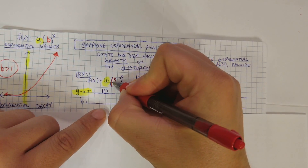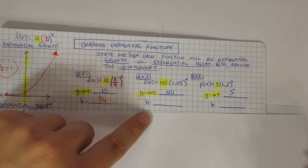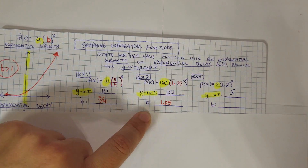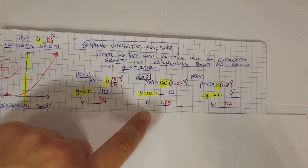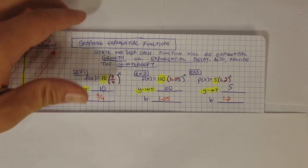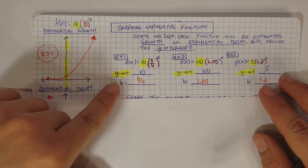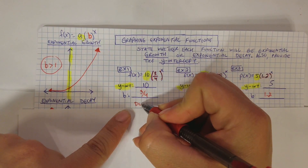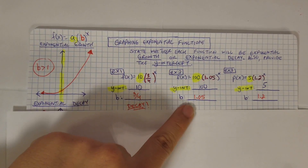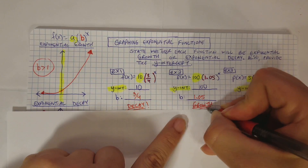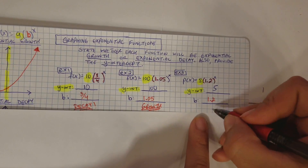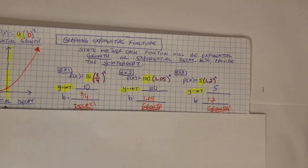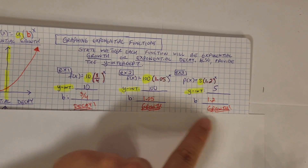So b for example 1 is 3/4. B for example 2 is 1.05, and for example 3, b is equal to 1.2. Remember the rule: if the value of b is less than 1, it's exponential decay. So 3/4 is 0.75, which is less than 1 — that's exponential decay. Example 2 has b bigger than 1, so it's exponential growth. Example 3 is also bigger than 1, so that's exponential growth as well. The bigger b is, the faster they increase; the closer to 1, the slower — but they'll increase or decrease either way.